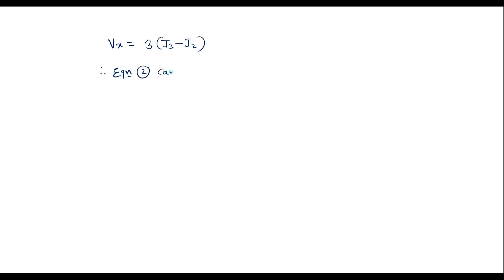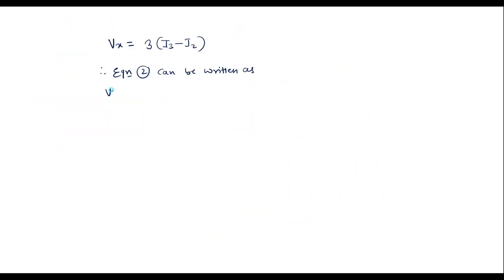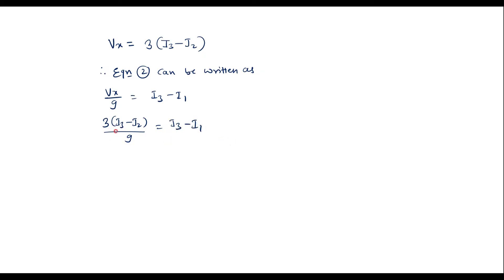Therefore, equation 2 can be rewritten. Equation 2 is: Vx/9 = I3 − I1, where Vx = 3·I3 − 3·I2. Substituting: (3·I3 − 3·I2) / 9 = I3 − I1, which simplifies to (I3 − I2) / 3 = I3 − I1. Cross-multiplying: I3 − I2 = 3·I3 − 3·I1.